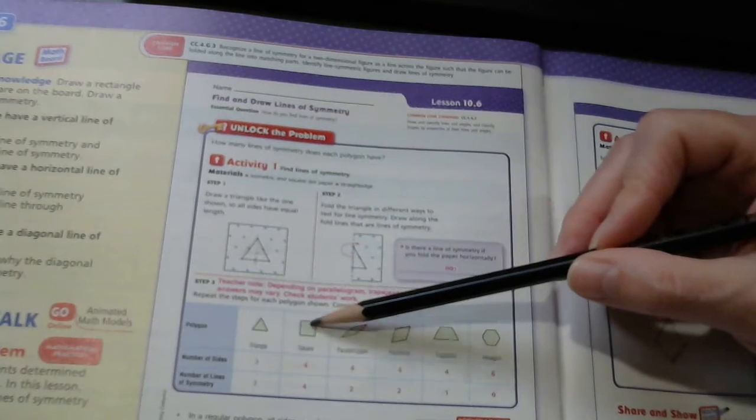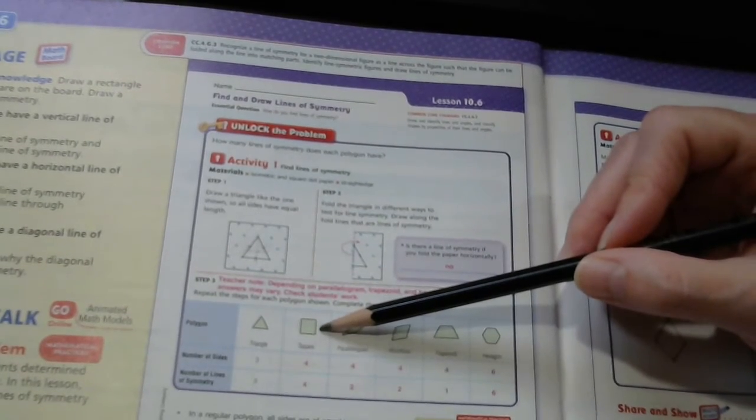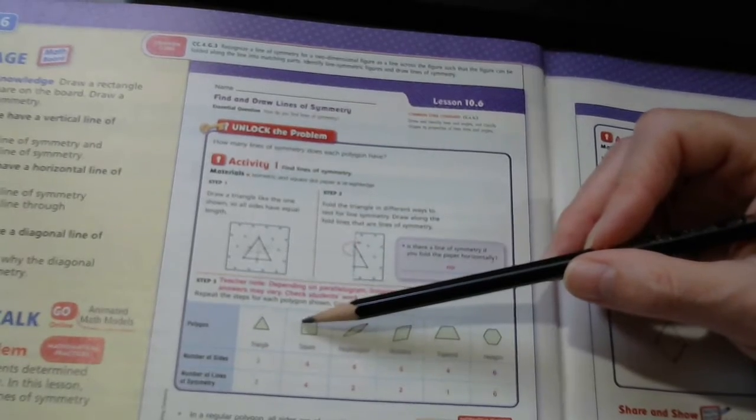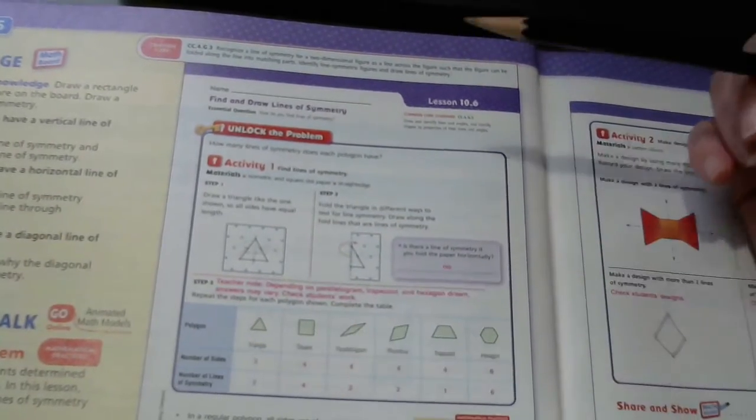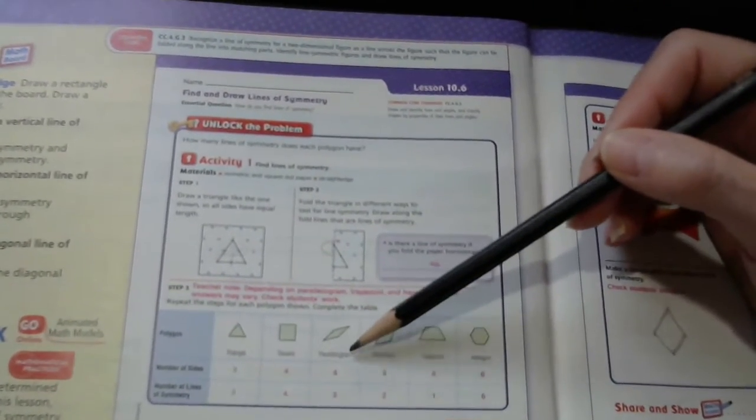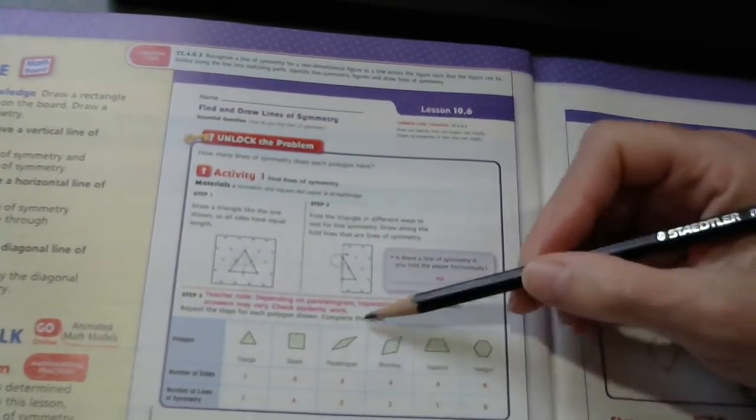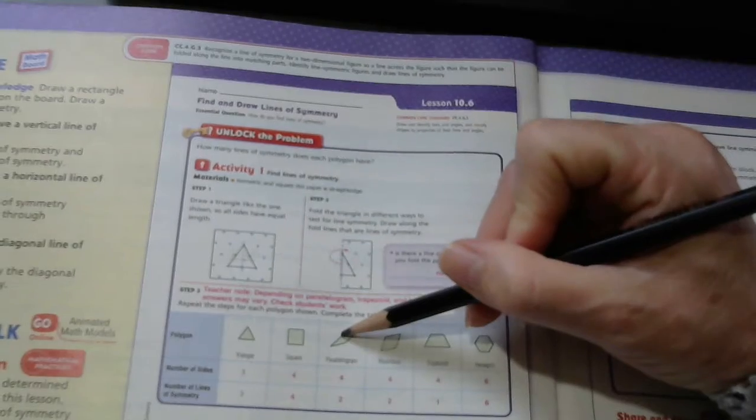Because you could fold it up, and you could fold it horizontally, and you could also fold it diagonally up, and diagonally down. With a parallelogram, there are a number of sides, four. Your lines of symmetry are two.